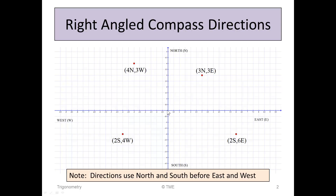So this point here is 4 north and 3 west. This point here — to get here from the origin, you first go south 2, and then 4 west. And the values are always positive, because there's no need for pluses and minuses — they're in the directions north, south, east, and west.